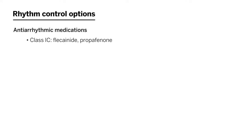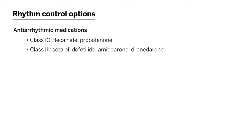I wanted to mention the rhythm control options that are available for patients. Antiarrhythmic medications are certainly an option, and those include class 1c agents — flecainide and propafenone — as well as class 3 agents: sotalol, dofetilide, amiodarone, and dronedarone. All of these drugs can be used for rhythm control in AFib patients. However, there has been a significant increase in the use of non-pharmacologic methods as well, particularly catheter ablation.